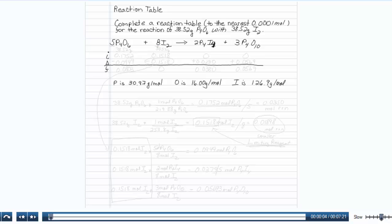This is how to do a reaction table. Our question reads, complete a reaction table to the nearest ten thousandth of a mole for the reaction of 38.52 grams of P4O6 with 38.52 grams of I2.